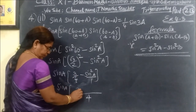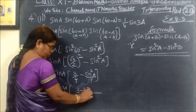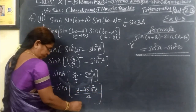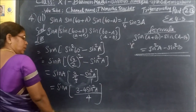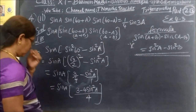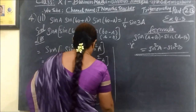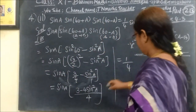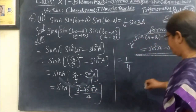So we get 3 minus 4 Sin²A. We need to do this step: 1 over 4 minus 1 minus, so 1 over 4. Inside Sin A, we take it inside.